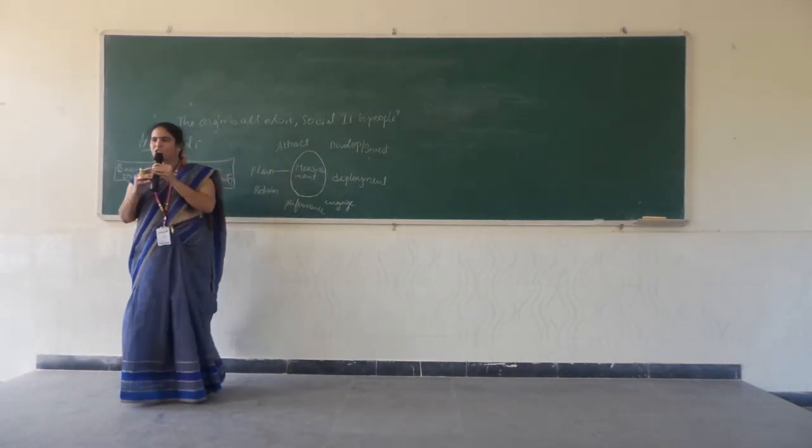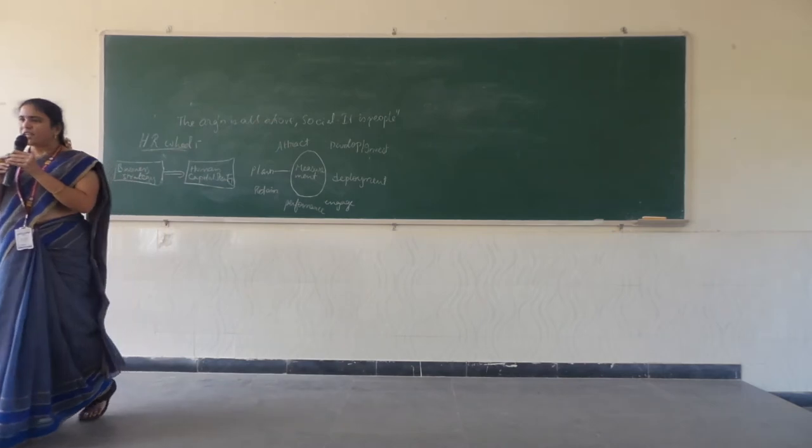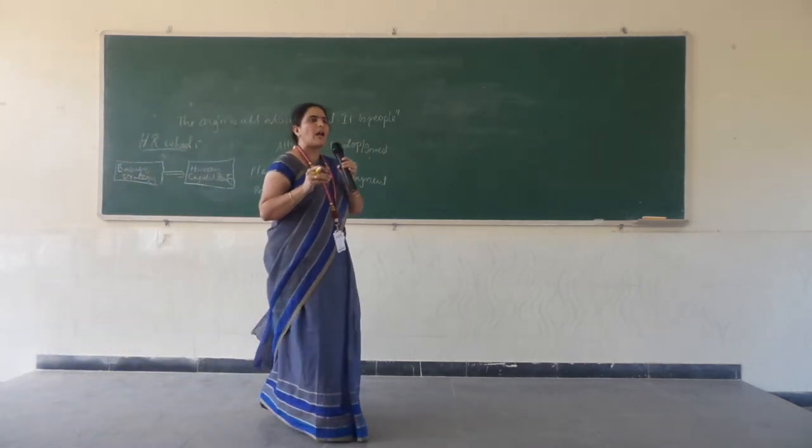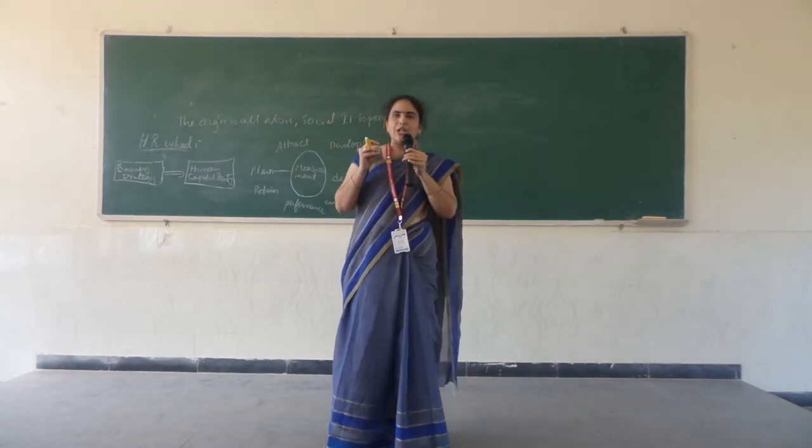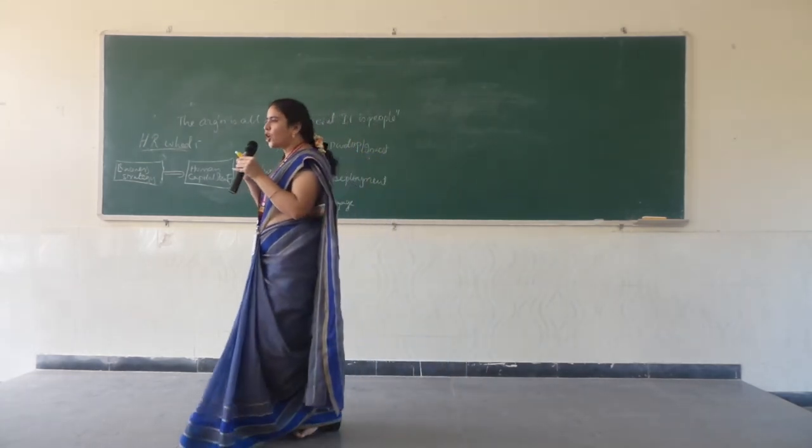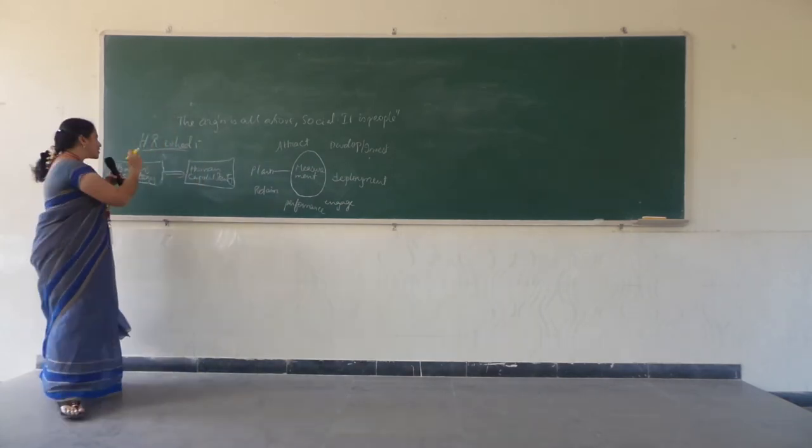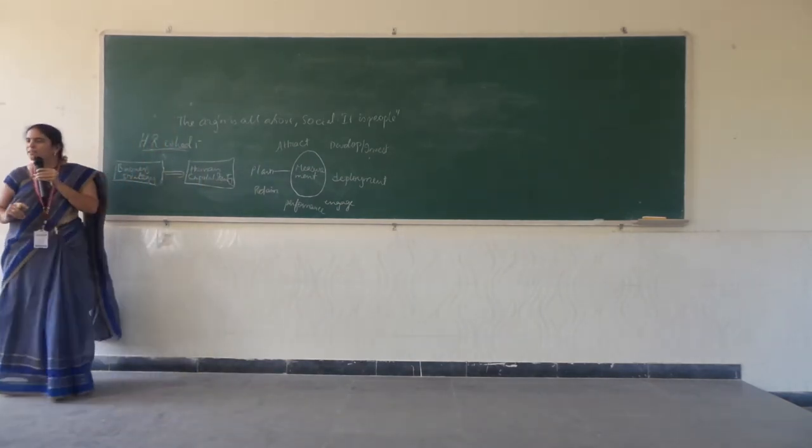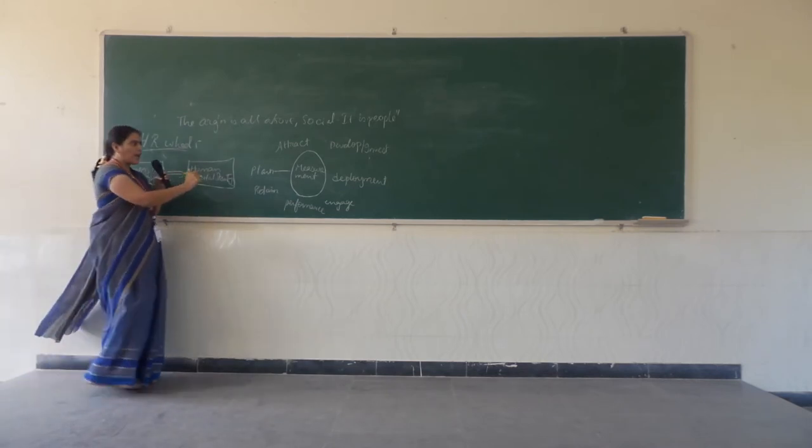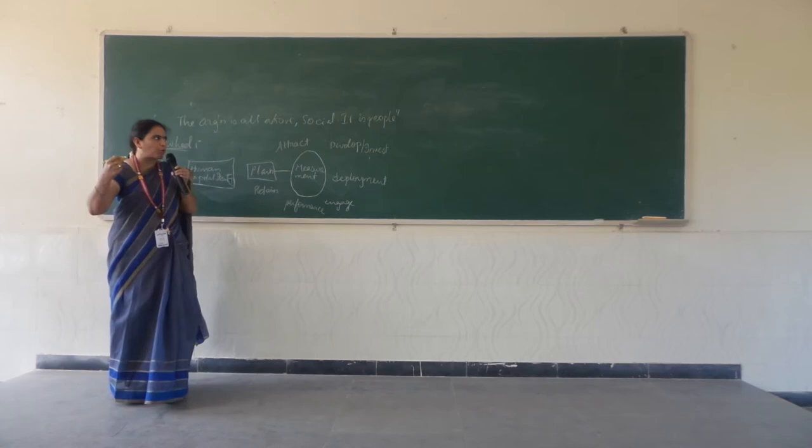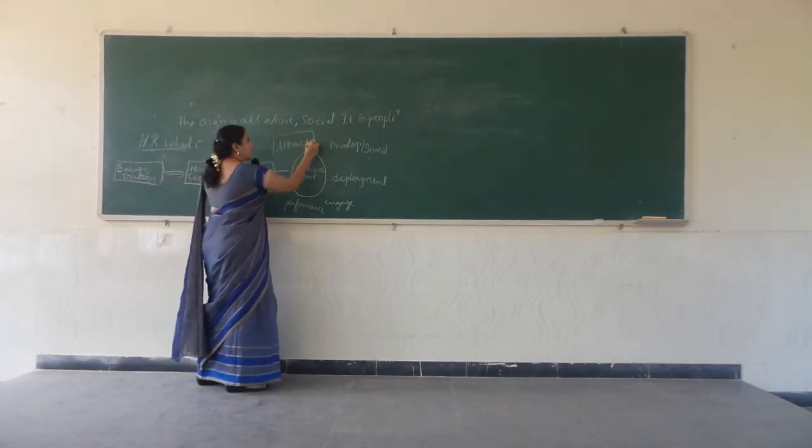First one is to plan, which means we need to identify the total number of the people that are required for our organization in terms of experience, knowledge, skill sets, capabilities and other requirements which are going to meet our business strategy. Once we have planned the total number of people whom we require, we are going to go to the next step, that is attract.